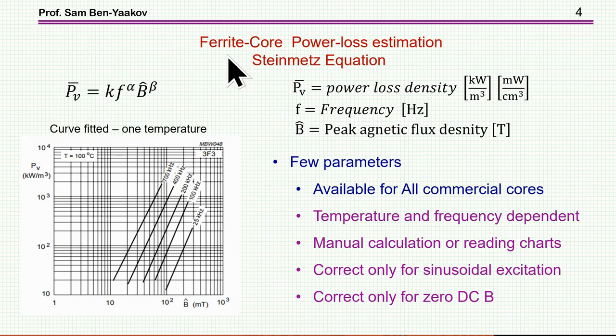So let me start with the losses in a ferrite core, ferrite material. It has been found that the losses can be expressed by this equation, the so-called Steinmetz equation, who was first to suggest this template. So here we have the losses in terms of kilowatt per meter cube or milliwatt per centimeter cube. F is frequency, while sometimes it's in kilohertz, really depends on the constant here. And B is the peak magnetic flux density in Tesla. So this is a very well-known template, which is now used very widely by manufacturers of ferrite material.